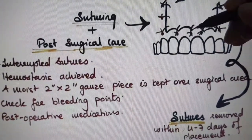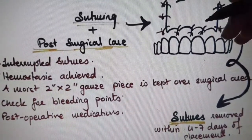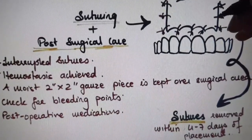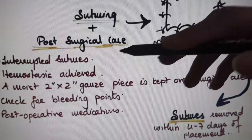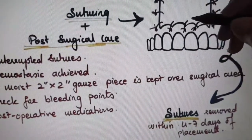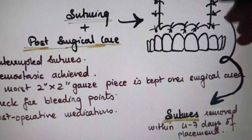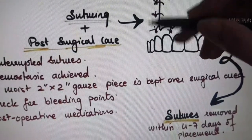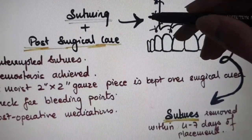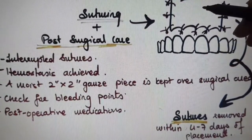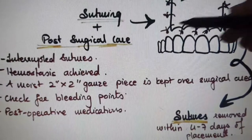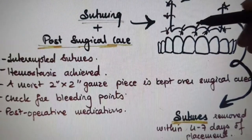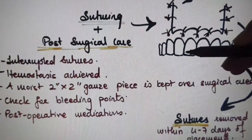For suturing, mostly reverse cutting needles are used in periradicular surgeries, and suture materials such as silk, gut, or polyglactin 910 are used. Most commonly, interrupted suture technique is used. In single interrupted technique, the first bite through the needle should be through the moveable tissue, and buccal entry is most preferable. These sutures are for closure and stabilization of the vertical releasing flaps. Sutures should be removed within 4-7 days of placement.